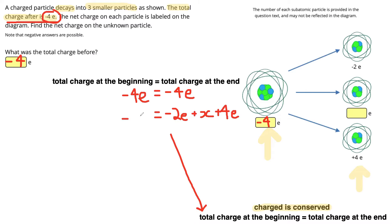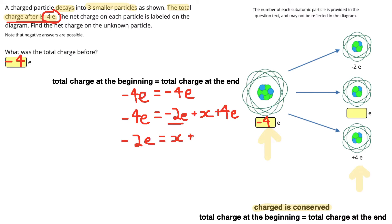Those will all add up to give us our total charge of negative 4e. So now we can rearrange our equation to get x on its own. I'm going to add 2e to both sides to get rid of the subtracted 2e, giving me negative 2e equals x plus 4e. Then I subtract 4e from both sides, ending up with negative 6e equals x. So the charge on this unknown particle is negative 6e.